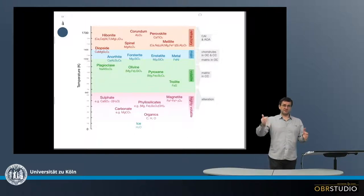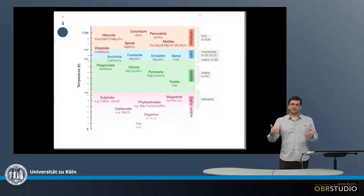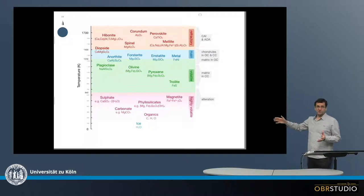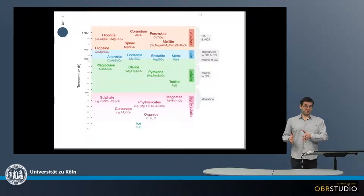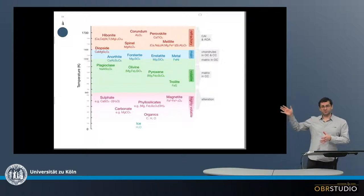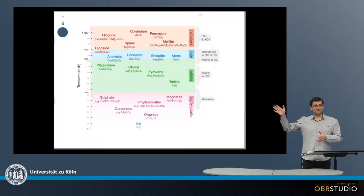When this gas started to cool, elements and minerals began to condense. This plot shows the sequence of minerals condensing from the gas. The mineral sequence is closely linked to the 50% condensation temperature of the elements, which is why the mineral formulas are shown here as well, so this link can be directly seen.